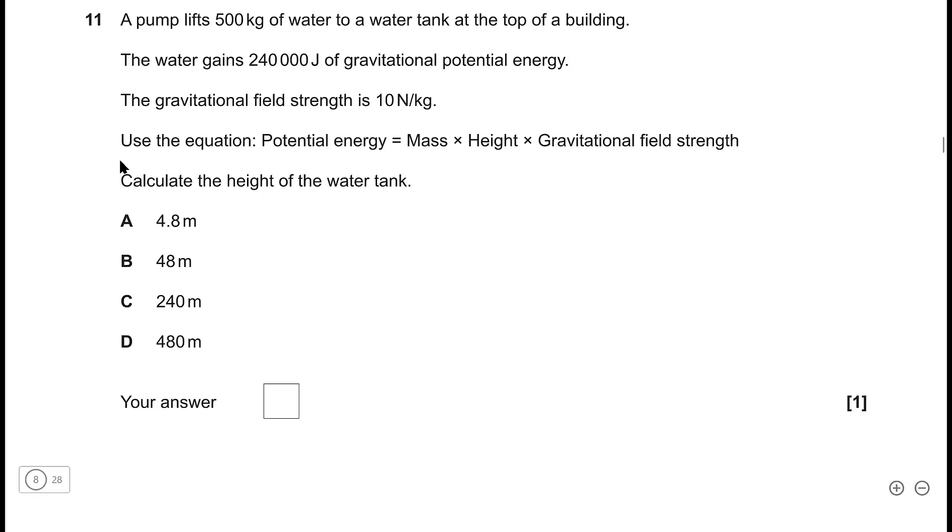I'm just going to use symbols for this equation. So potential energy E_P is equal to mass times the height times gravitational field strength, which I'm just going to call g. Now all we need to do is rearrange for the height.